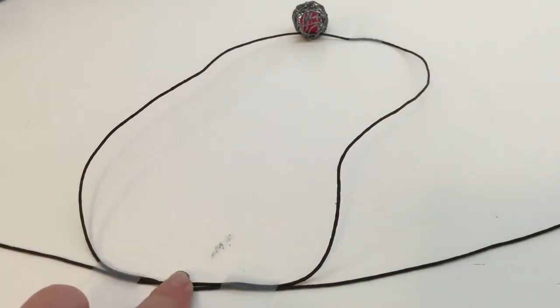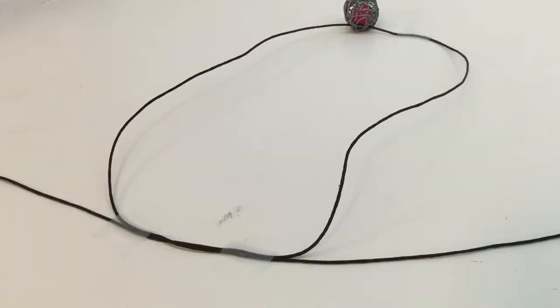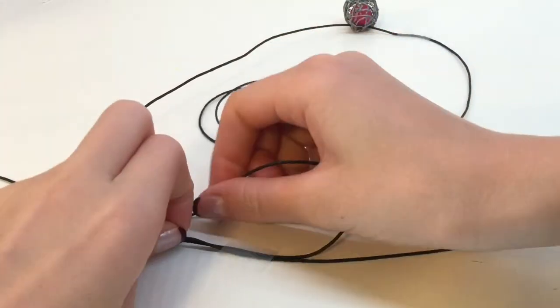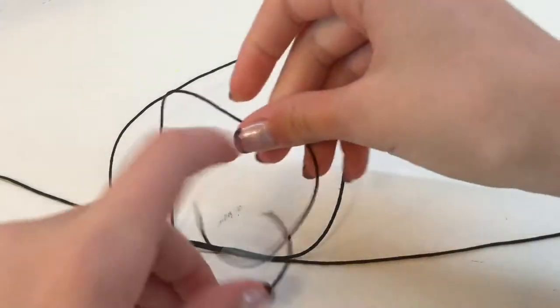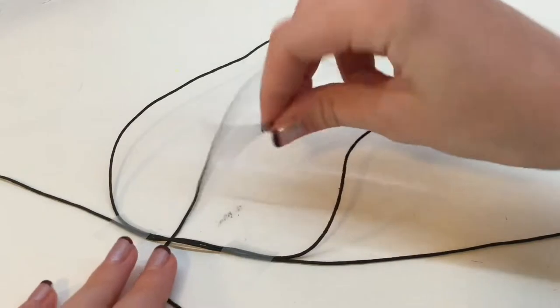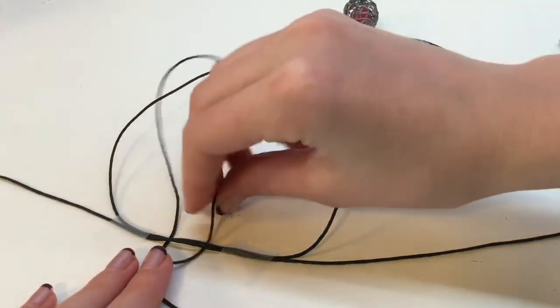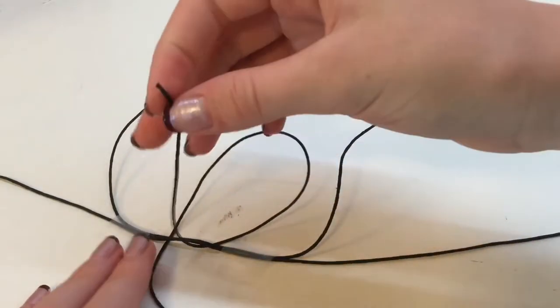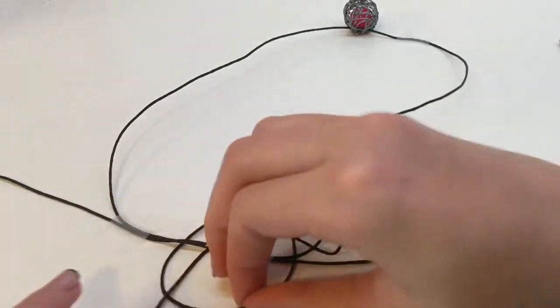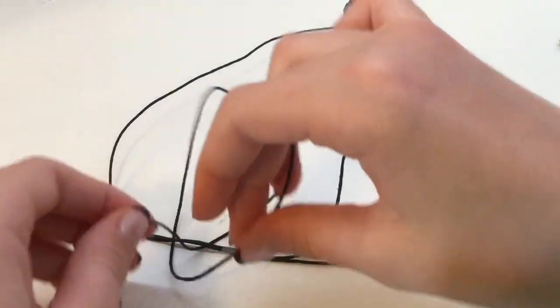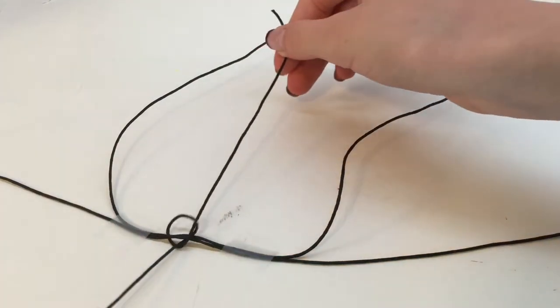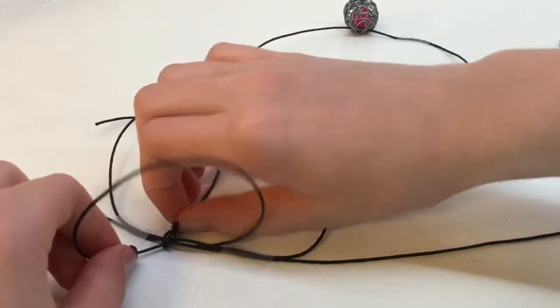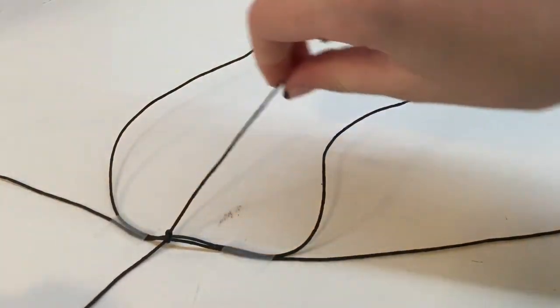Then you're going to want to make a square knot with the two strings. You can watch videos on how to make a square knot, but I'll try my best to explain. Start with the right strand and put it underneath the middle and then over the left strand. Then take the left strand and put it through the right loop and pull both ends to make the first half of your square knot.